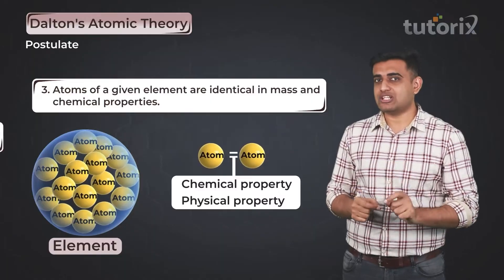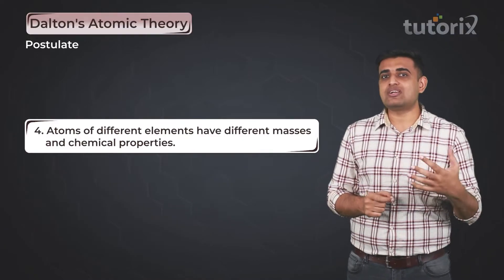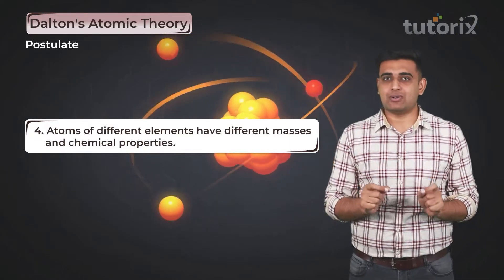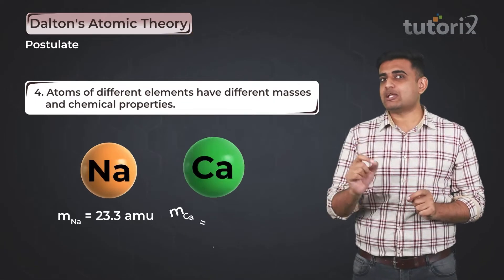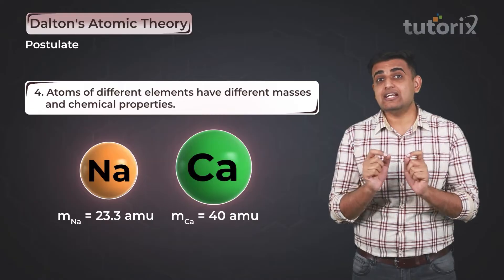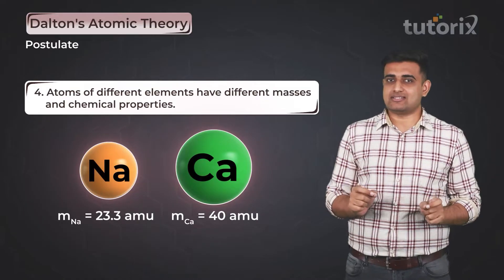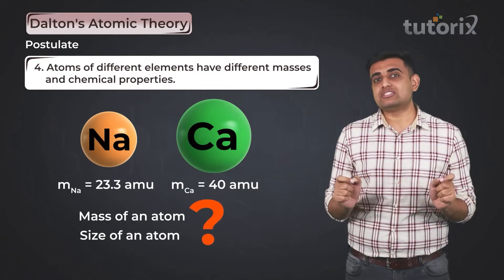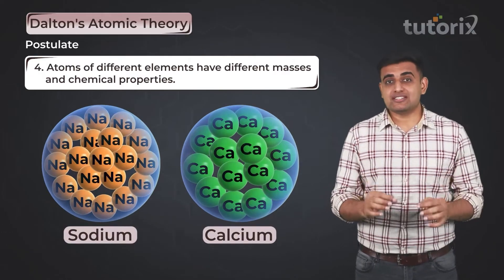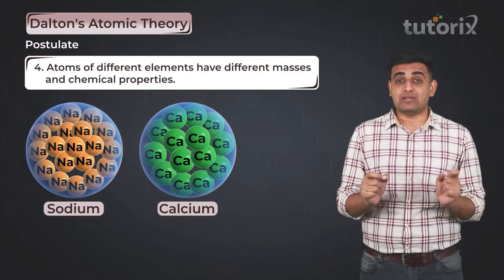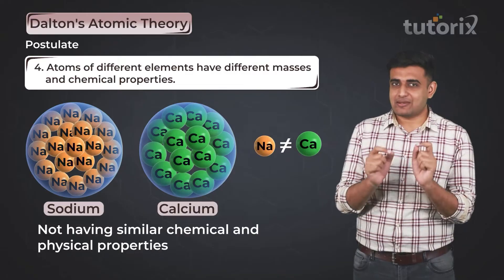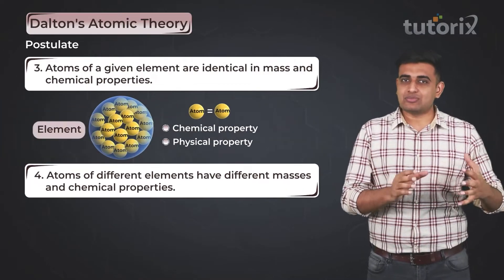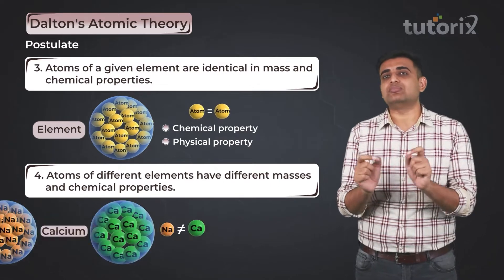Associated with this is the fourth postulate, in which Dalton explains that atoms of different elements have different masses and chemical properties. If you compare an atom of sodium with an atom of calcium, you can clearly notice differences in their size and mass. Two different elements both have atoms, but the atoms from different elements differ in mass and chemical properties. The third and fourth postulates together help us correlate properties of atoms from the same element and from different elements.